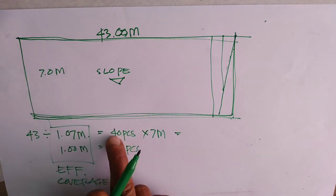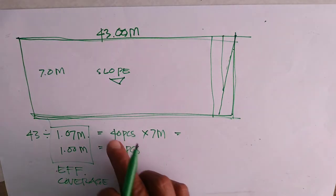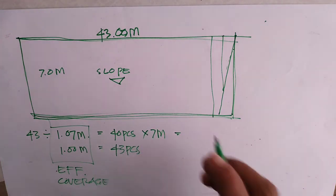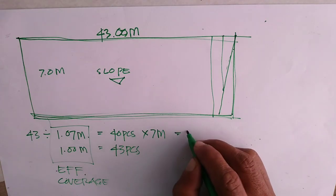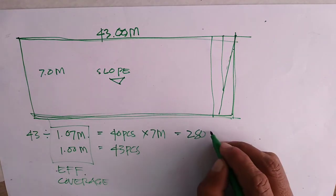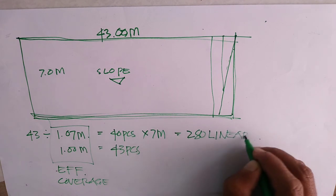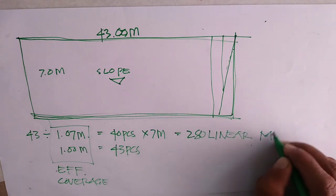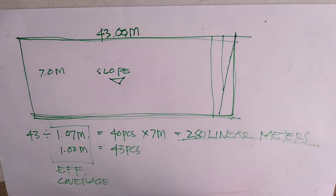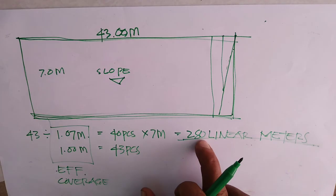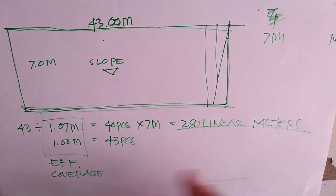40 times 7. 40 times 7 is 280 linear meters. So, ito po yung total na pibilin mo.